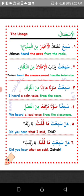Number five: Sami'ta — talking to Zaid as a single male person. Did you hear? Number six: Sami'ti — talking to Zaid as a single female person. I hope you understand. MashaAllah.